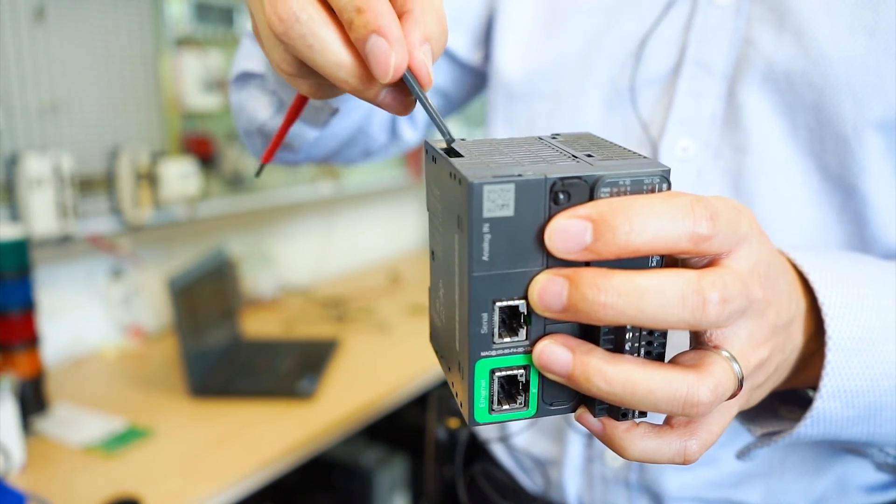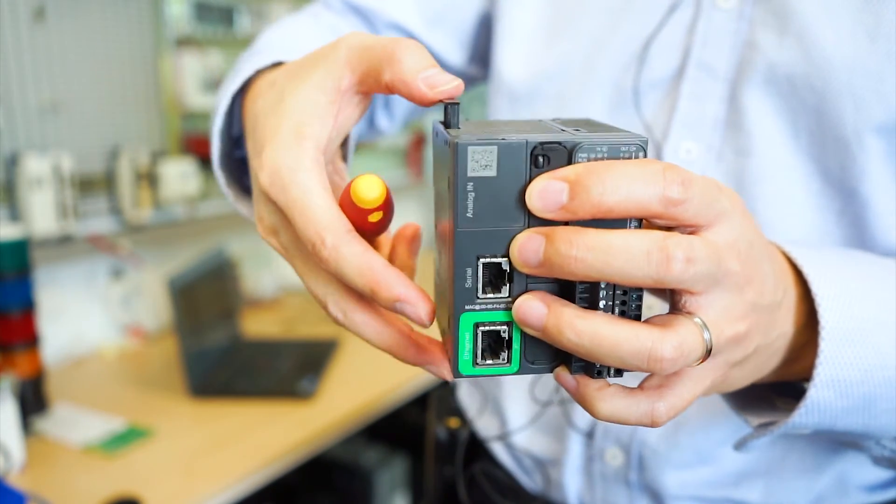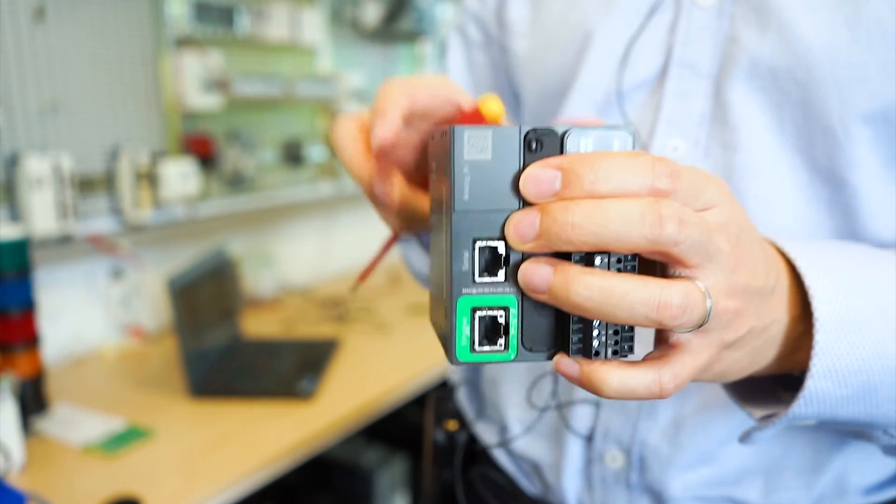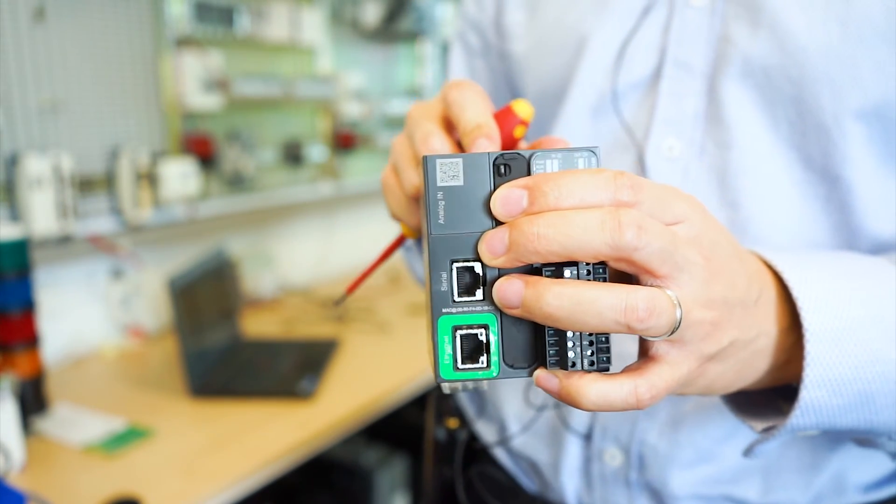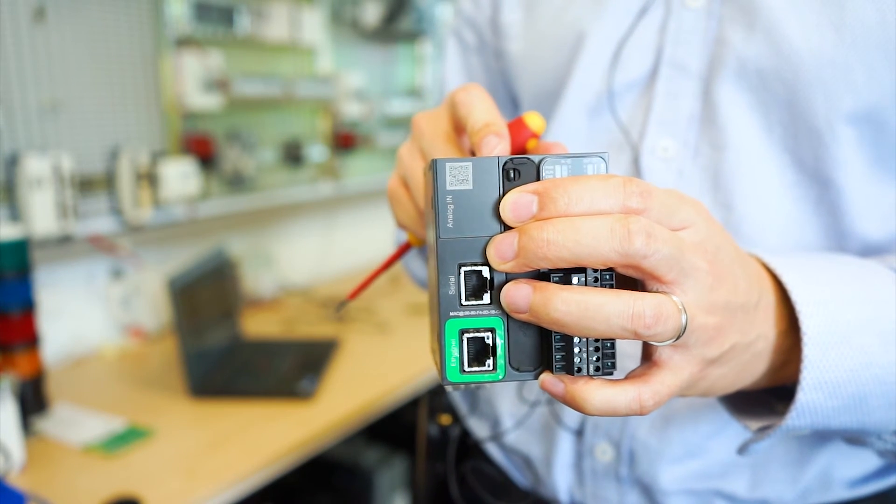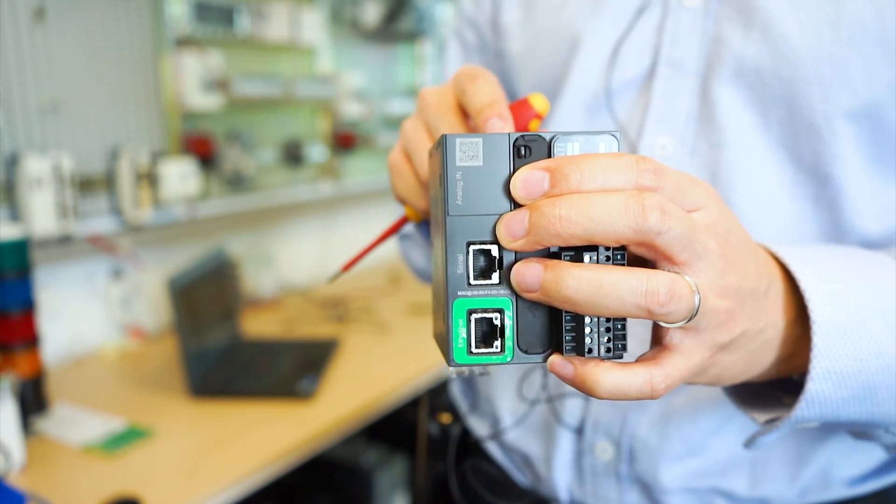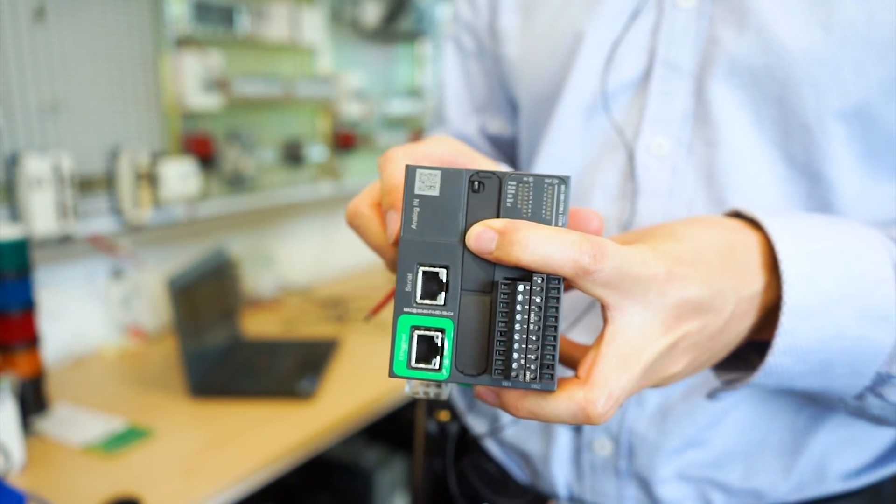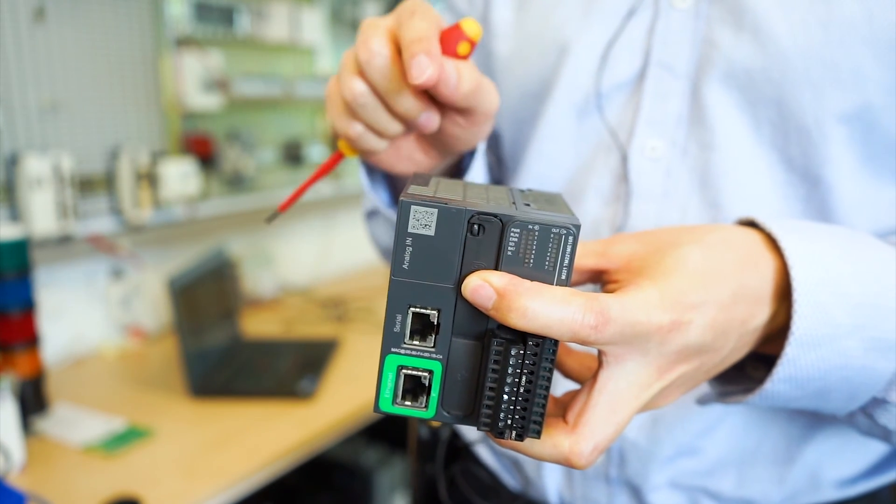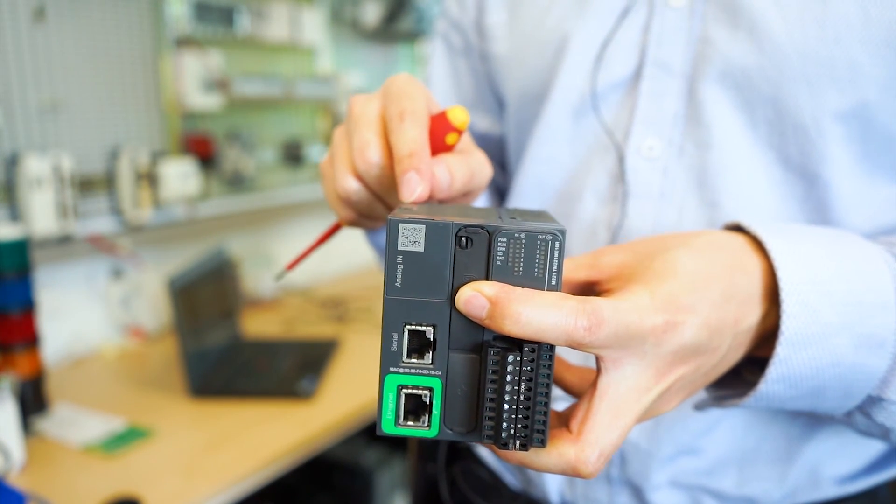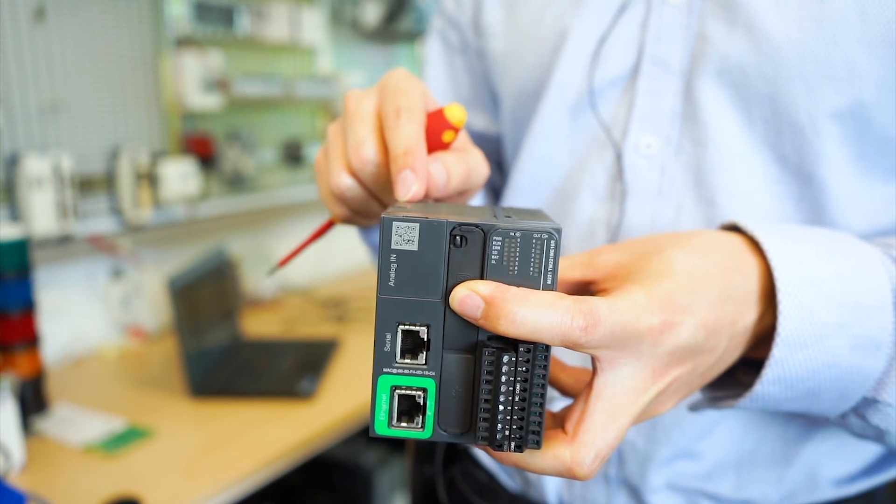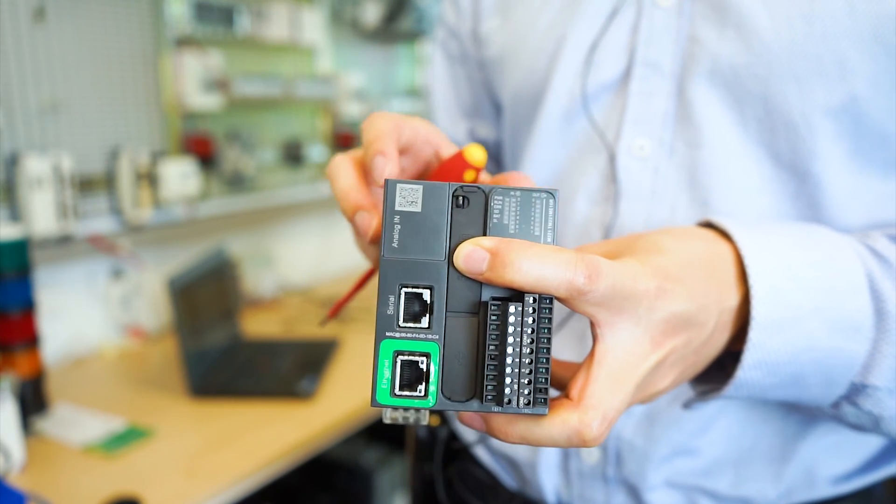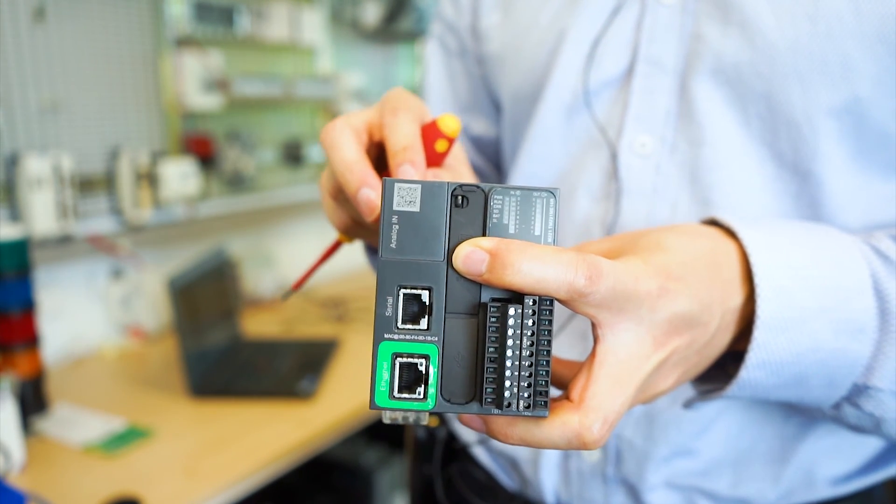The reason we have this battery here is because we have a real-time clock built into this controller. So we can use the battery to maintain the RTC and also to save all the data if there is a power interruption. The backup life for this battery is at least one year at 25 degrees maximum. If you run this controller in a higher temperature environment, the time will be reduced.